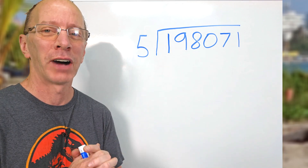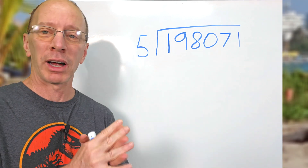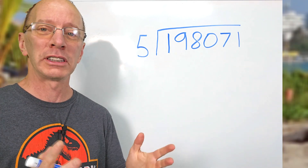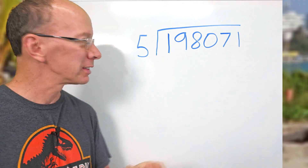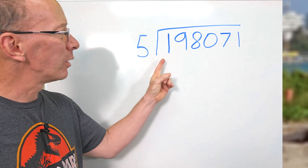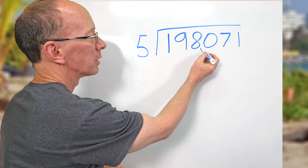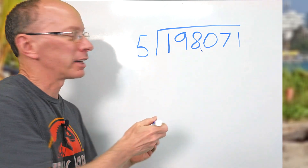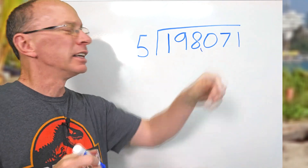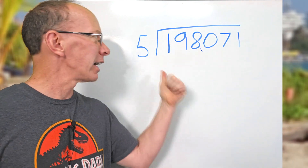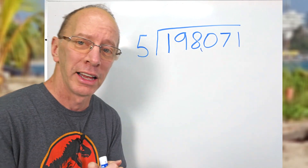Hey, welcome to the show. I was sent a division problem from one of my subscribers — I always like to read the comments. They wanted this big number right here, with a couple commas: 198,071 divided by five. So we're going to be doing that on this show today.